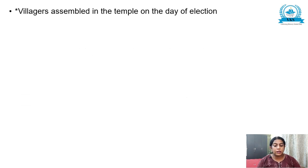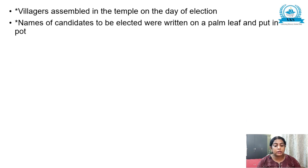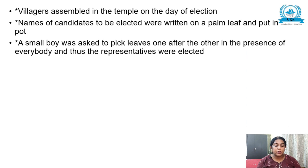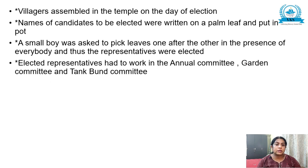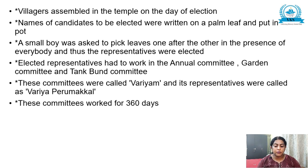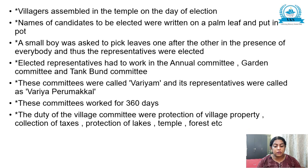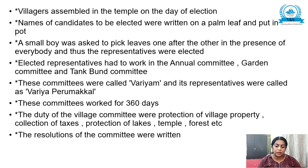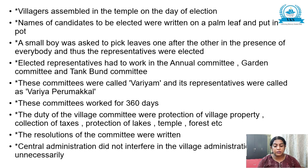Members were elected through a lucky draw system called Kuduwalai. Villagers assembled in the temple on the day of election. Names of candidates were written on palm leaves and put in a pot. A small boy was asked to pick one leaf after another in the presence of everybody, and thus representatives were elected. Elected representatives had to work in the annual committee, garden committee and tank bund committee. These committees were called Varyams and their representatives were known as Varya Perumakkal. They worked for 360 days. The resolutions of committees were written, and central administration did not interfere in village administration unnecessarily — they were autonomous.